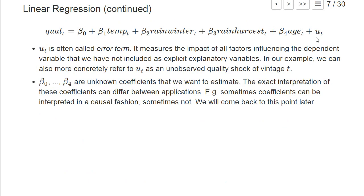Then we have here a final variable called ut which is often called an error term, and you often use also an epsilon t to denote it. Basically, it measures all other factors that influence the dependent variable, so the quality of the wine, which we have not explicitly included as explanatory variables.